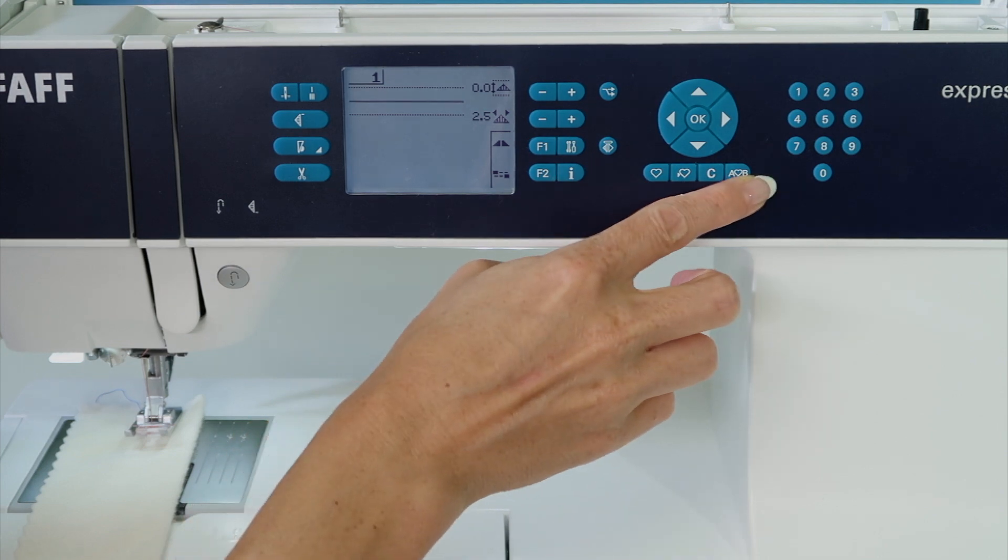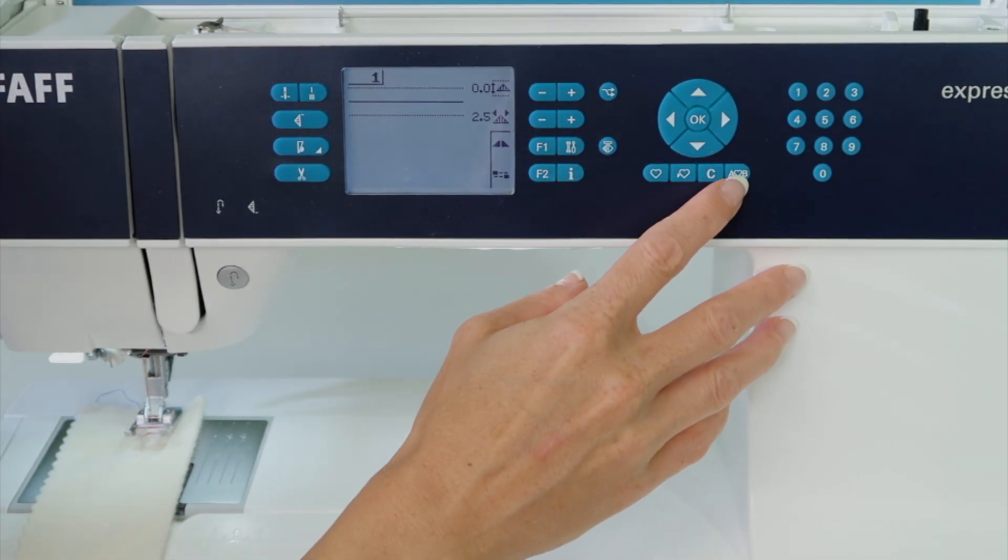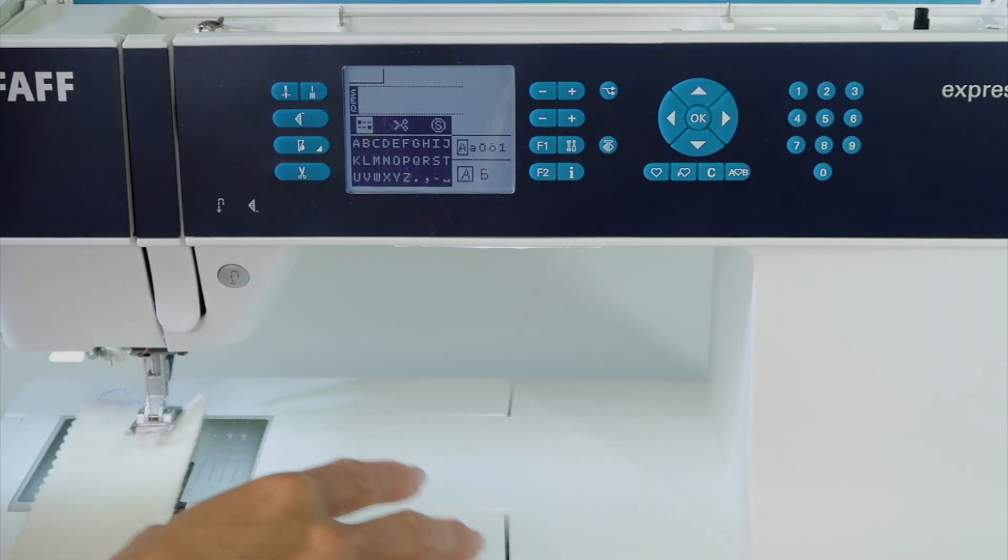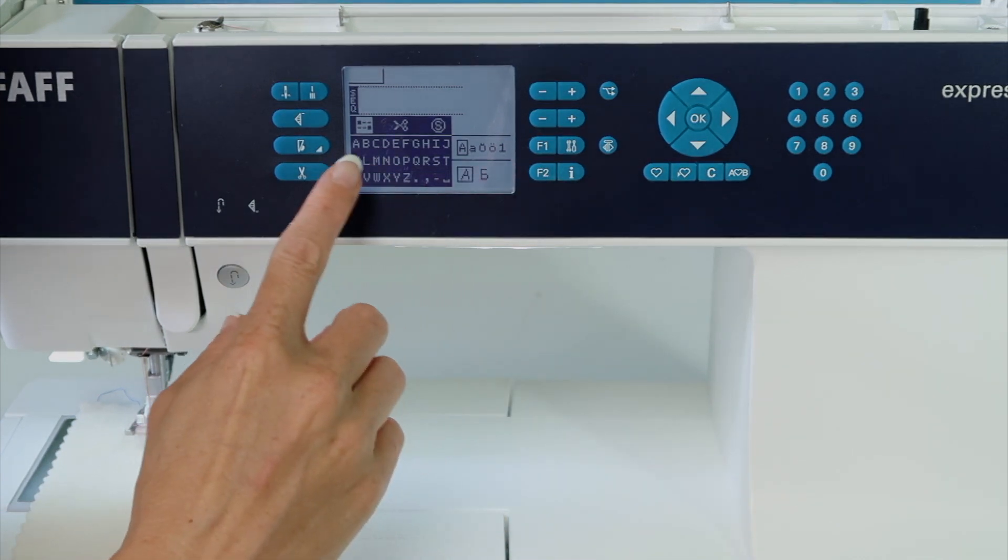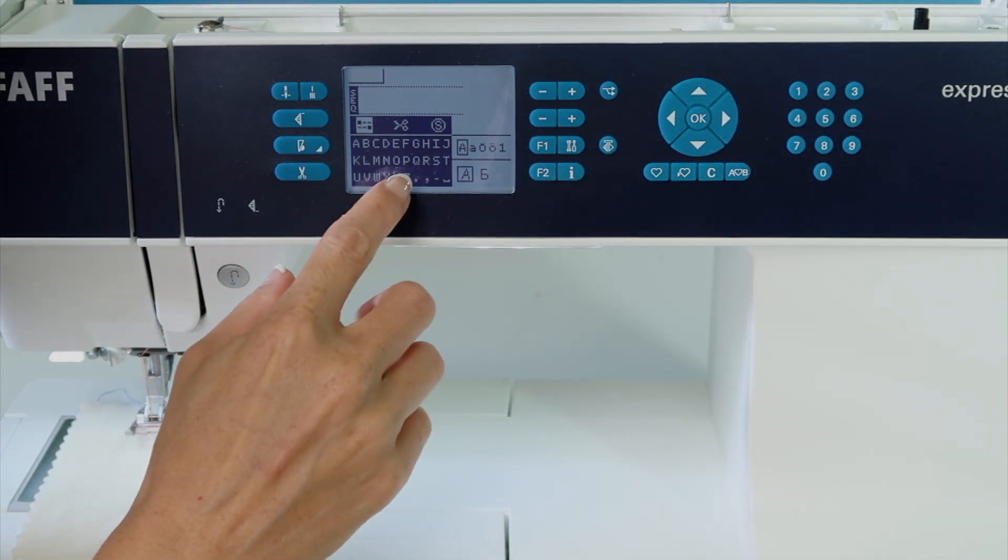These four buttons are part of the memory part of this machine. The A heart B button is what you'll start by pushing to open up a memory. If you are in the alphabet area, you can see that you have alphabets here.